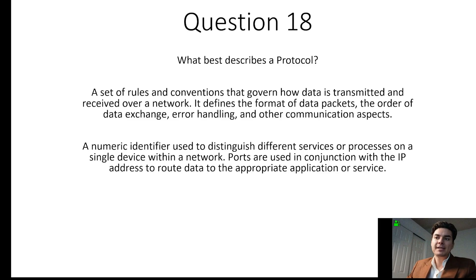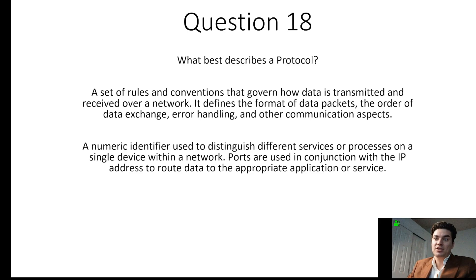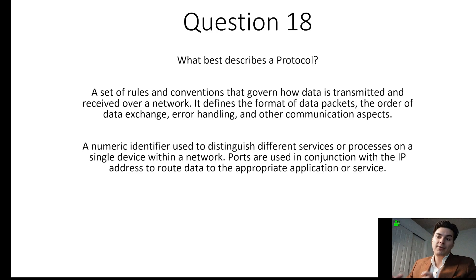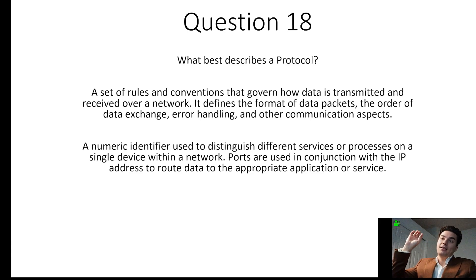Question 18. What best describes a protocol? A protocol is a set of rules and conventions that governs how data is transmitted and received over a network. It defines the format of data packets, the order of data exchange, error handling, and other communication aspects. The other option describes a port — a numeric identifier used to distinguish different services or processes on a single device, used in conjunction with an IP address to route data to the appropriate application or service, for example 8.8.8.8 port 53 for DNS.